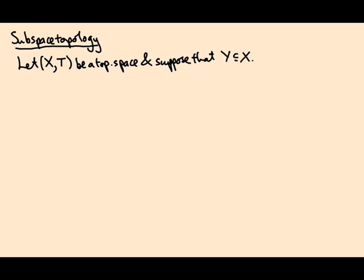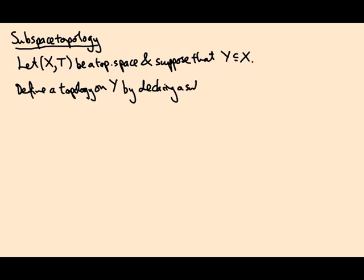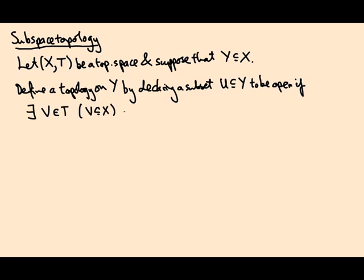I claim Y inherits a topology from the topology of X. Define a topology on Y by declaring a subset U of Y to be open if there exists an open set V in the topology on X — so V is a subset of X — such that U equals V intersect Y.